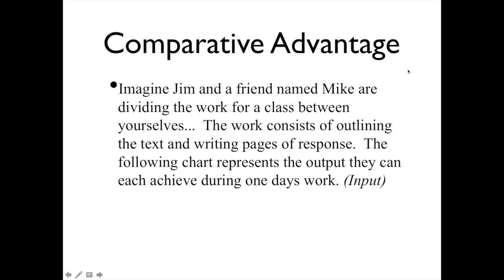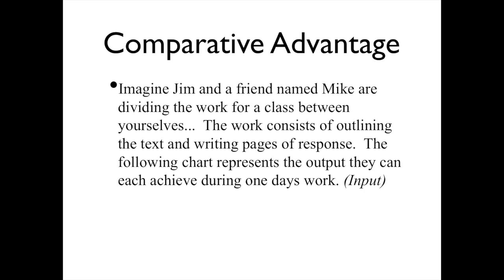Now imagine we have Jim and a friend named Mike who are dividing work between themselves for a class. The work consists of outlining the text and writing pages of response. The following chart represents the output they could achieve in one day of work — one day being their input. So how much output could they achieve in a single day?